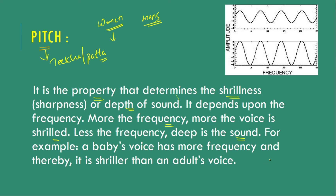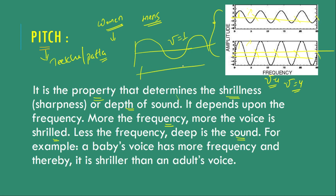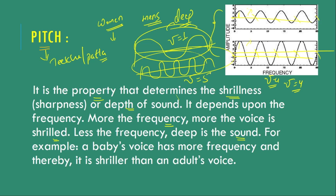For example, looking at these two wave figures: if you count the frequency of the first wave — 1, 2, 3, 4 — the frequency is 4. If we count the second wave — 1, 2, 3, 4 — the frequency is also 4. If we talk about amplitude, one amplitude is higher and the other is lower, so one sound will be louder and the other more faint. If one wave has frequency 1 and another has frequency 5, the wave with higher frequency is the shrill or baby-like wave, and the one with lower frequency is the deep or adult wave.